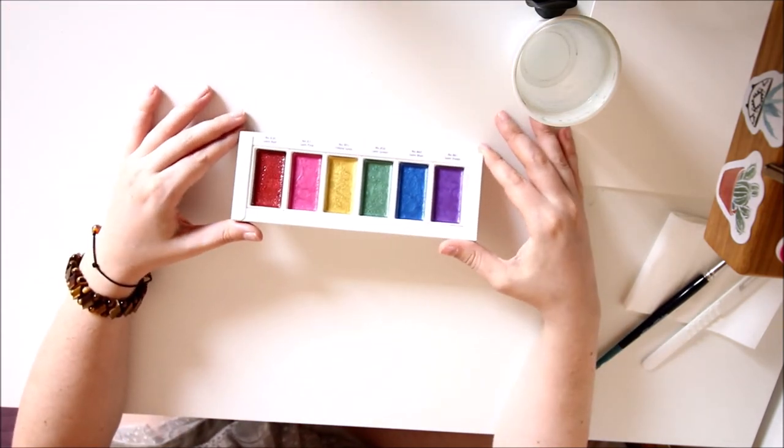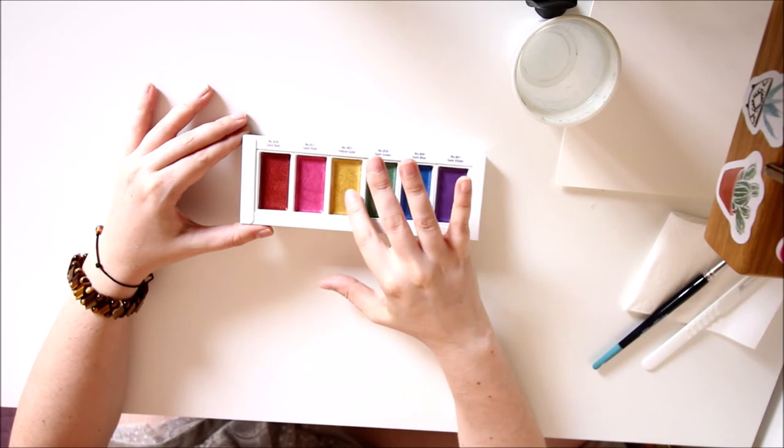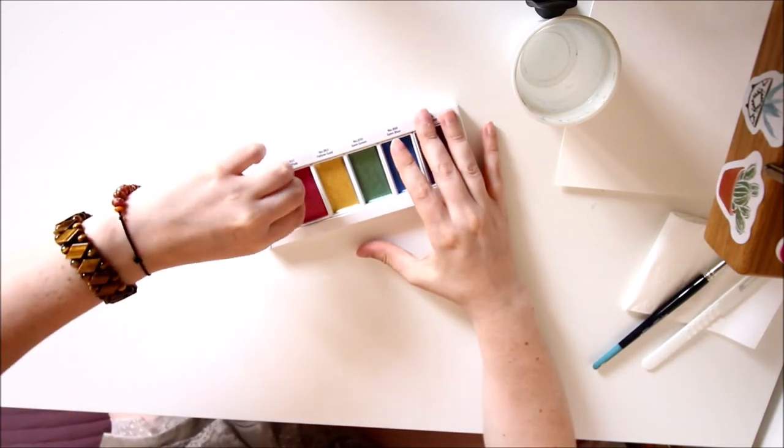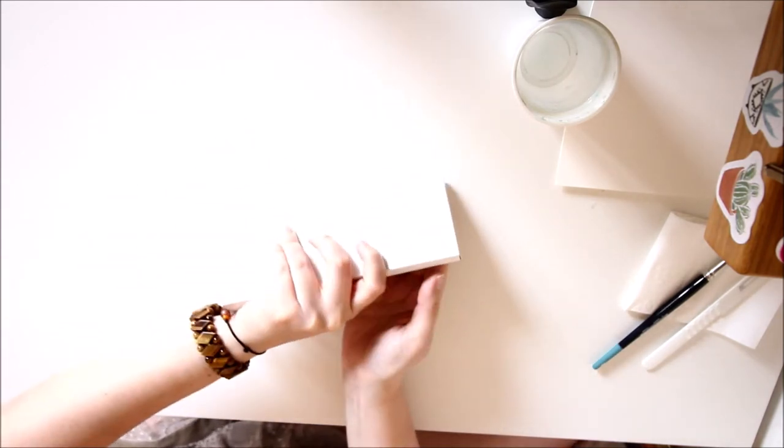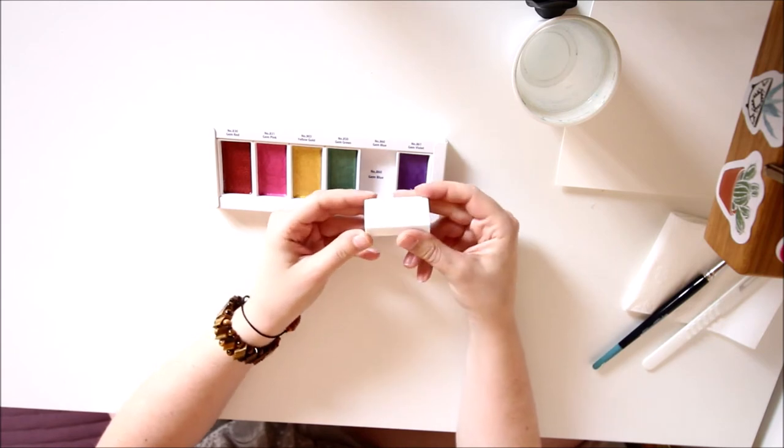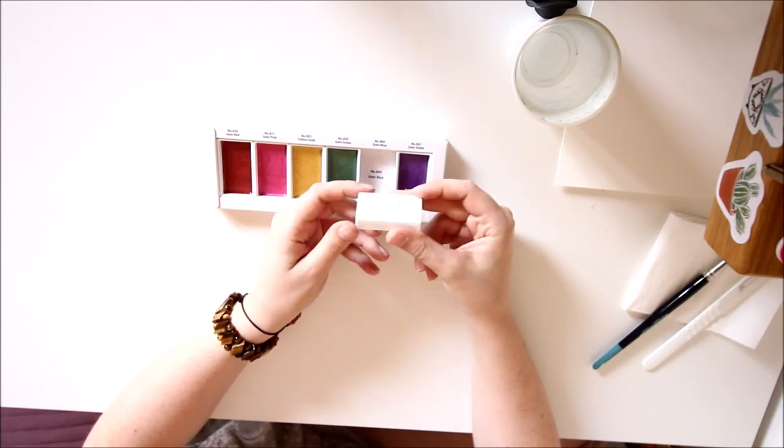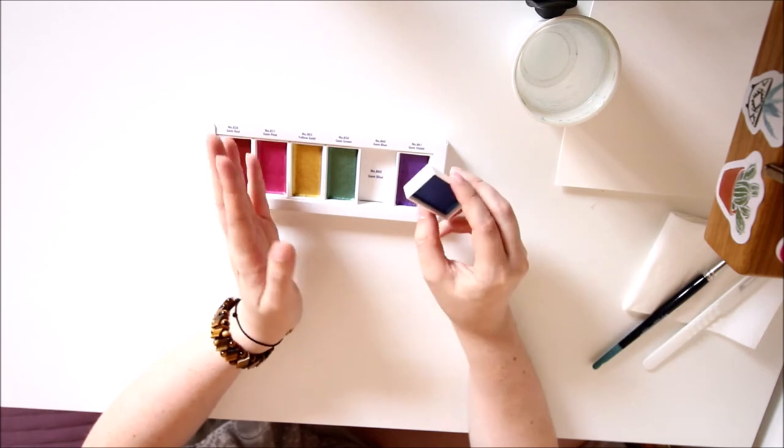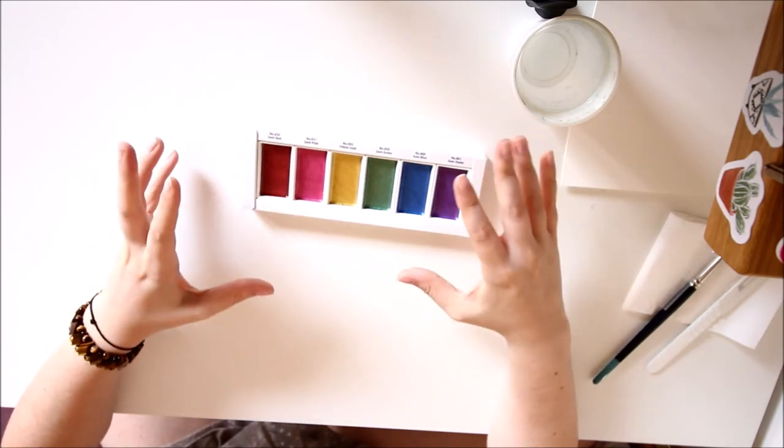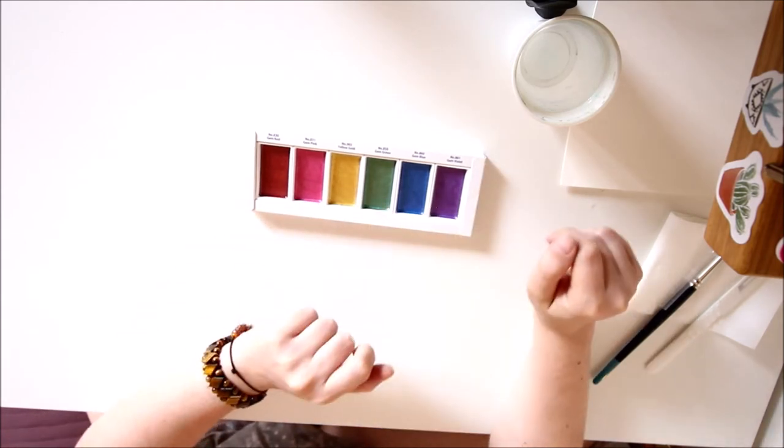This is the set. It's basically a rainbow set so you have the pans which are the Gansai Tambi ones. You have the ginormous pan with something written behind it in Japanese I guess. I will have to ask my friends who actually speaks Japanese. The colors are all gems - gem red, gem pink, yellow gold, gem green, gem blue, and gem violet. Rainbow colors.